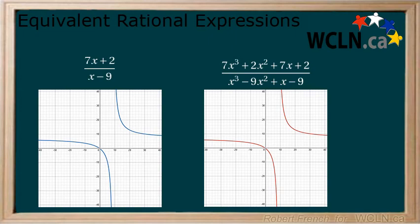which is what we expected because multiplying by x squared plus 1 over x squared plus 1 is the same as multiplying by 1, which does not change the value of the rational expression.